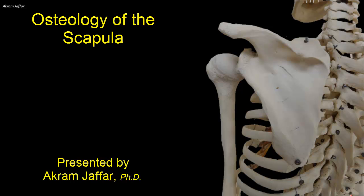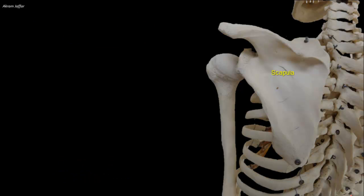The scapula, or shoulder blade, is a flat bone that is triangular in shape. It lies on the posterolateral surface of the thorax, overlying the second to the seventh ribs.